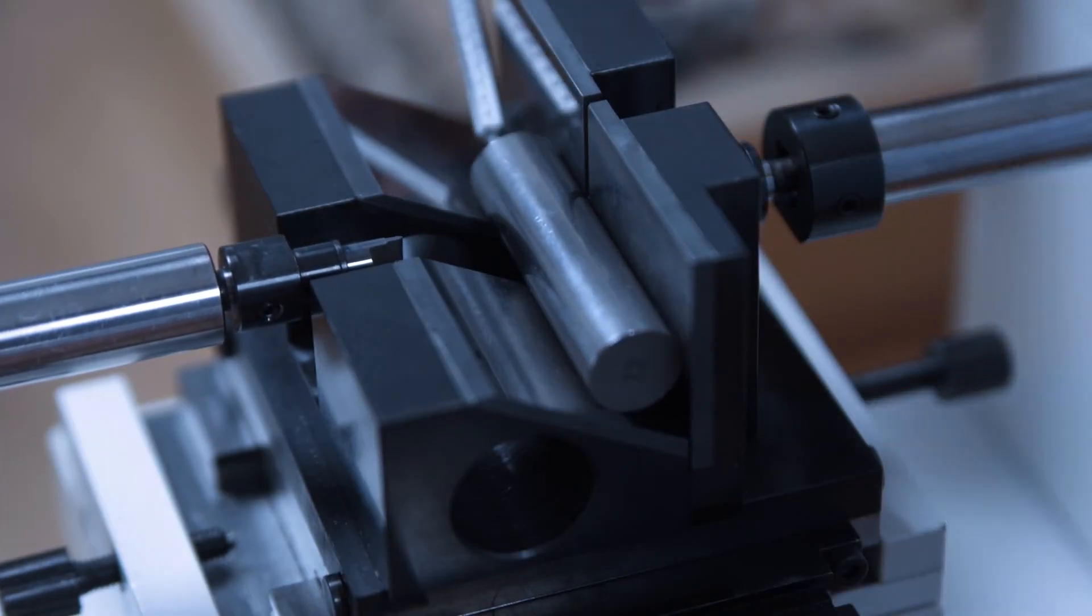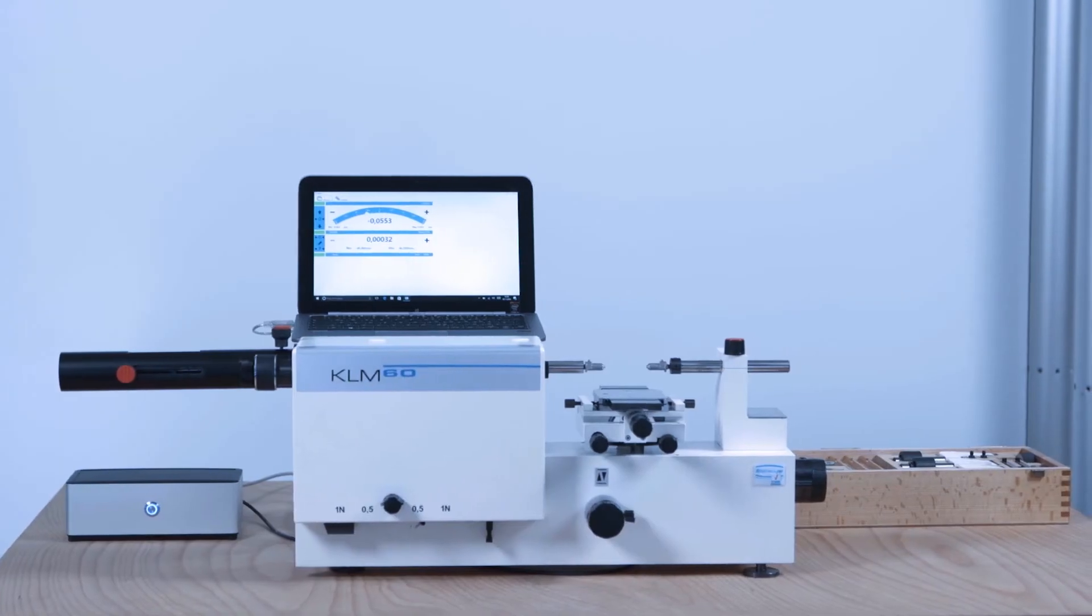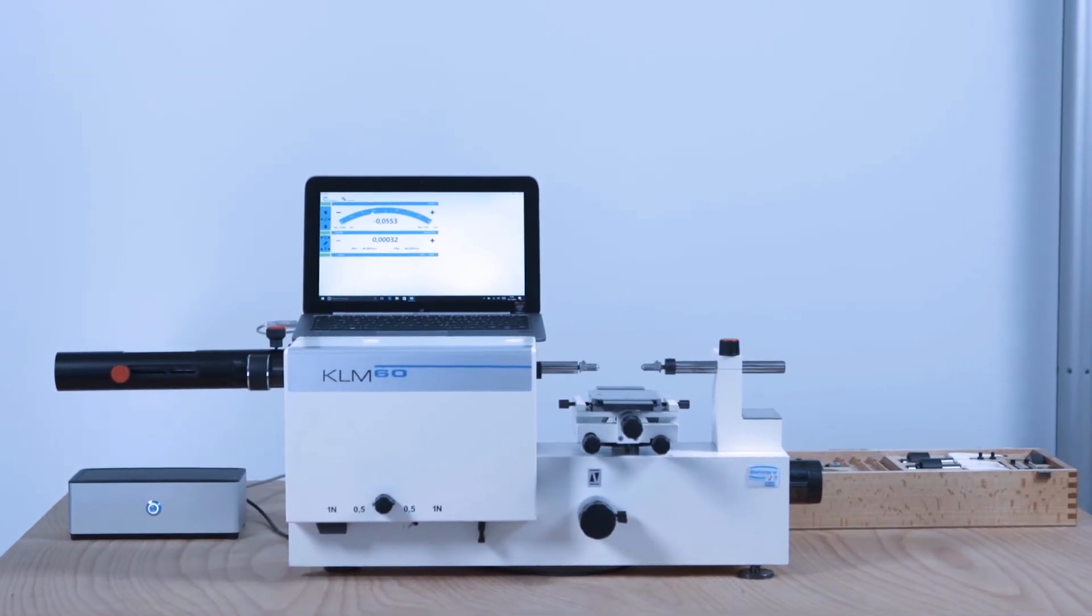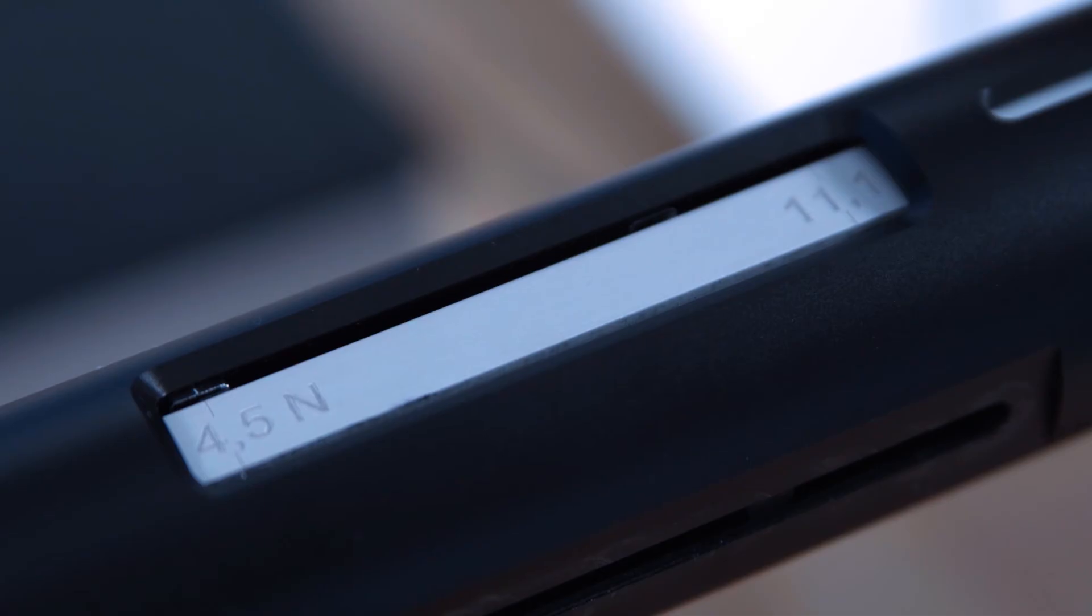Further optional accessories include pivoted stages, quick action clamping elements or sets for thread measurements. These greatly extend the range of applications and allow easier and more economical calibrations.